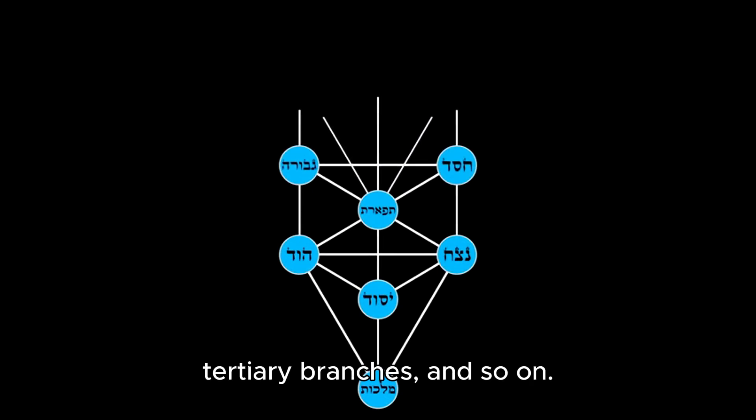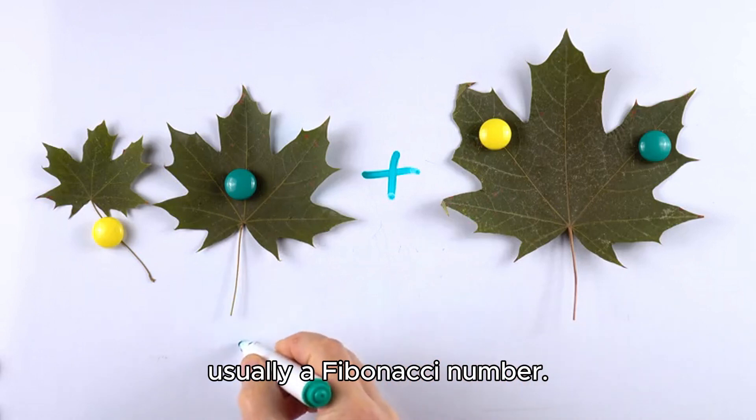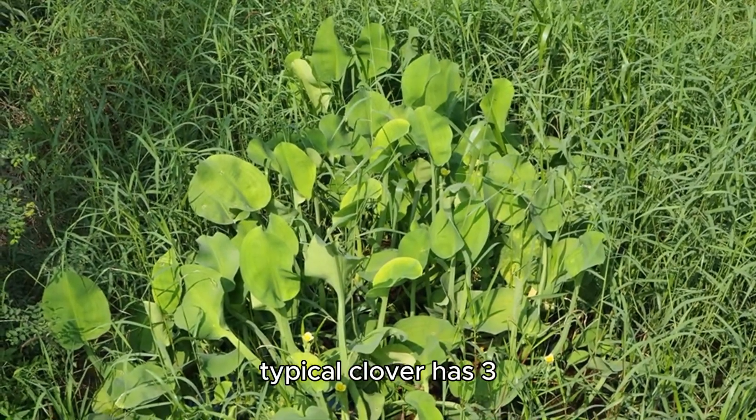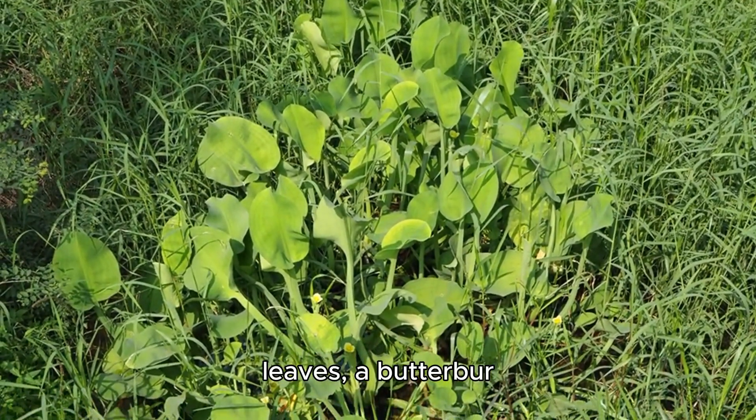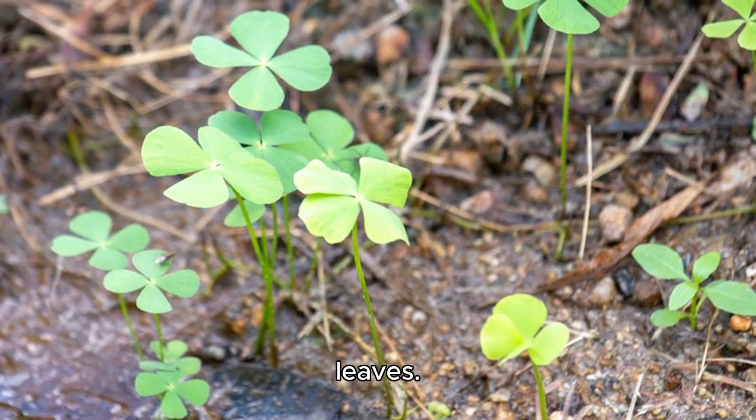The number of leaves on a stem is usually a Fibonacci number. For example, a typical clover has 3 leaves, a butterbur has 5 leaves, and a marsh marigold has 8 leaves.